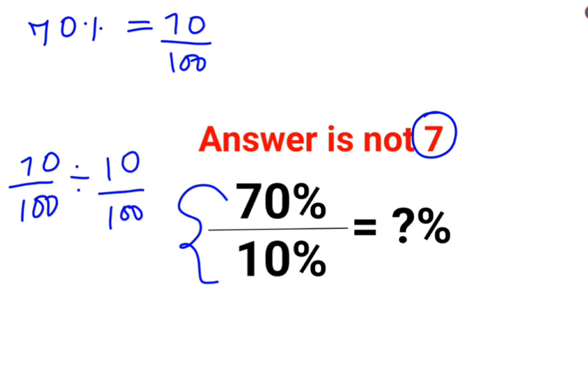Now when you want to do division, you need to follow the rule of KCF where K stands for keeping the first number as it is, C stands for changing the division sign to multiplication, F stands for flipping or taking reciprocal of 10 upon 100 which is 100 upon 10.